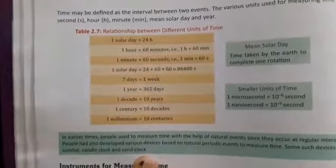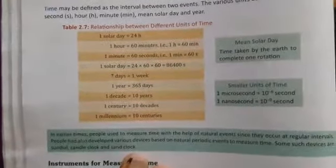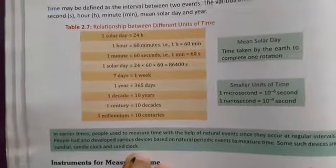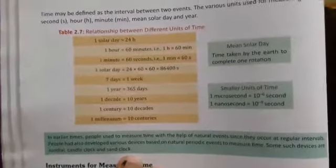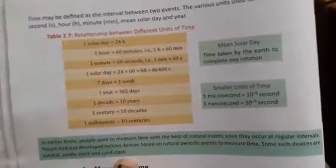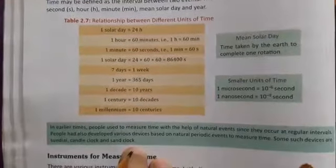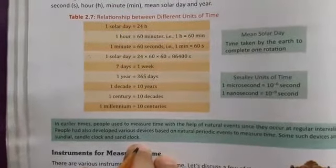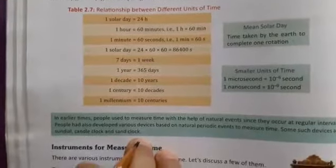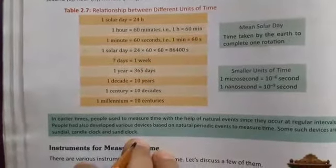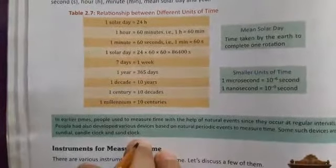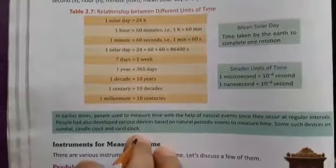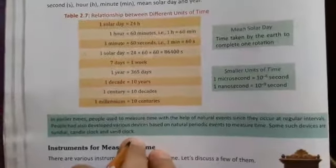Let us see: one solar day equals to 24 hours, one hour equals to 60 minutes, one minute equals to 60 seconds, one solar day equals to 24 × 60 × 60, that is equal to 86,400 seconds. Seven days equals one week, one year equals 365 days, one decade equals 10 years, and one century equals 10 decades. One millennium is equal to 10 centuries.